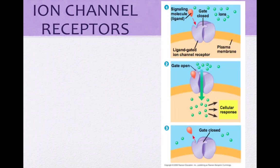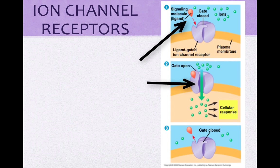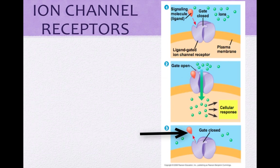The third type is ion channel receptors. Protein pores that open or close in response to a chemical signal are considered ion channel receptors. When the ligand binds to the ion channel proteins, it opens up, allowing ions to flow in. When the ligand leaves, the channel closes. This is important in the nervous system.